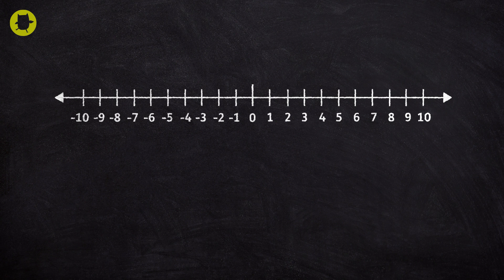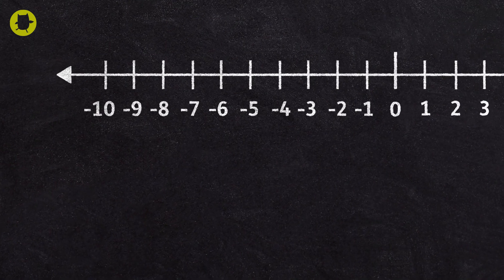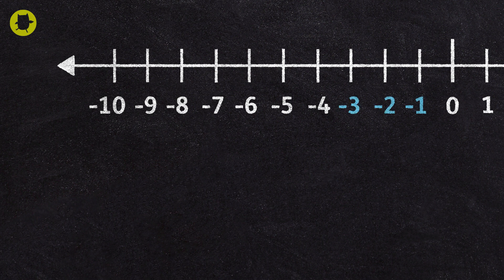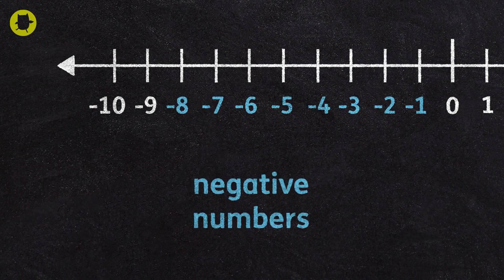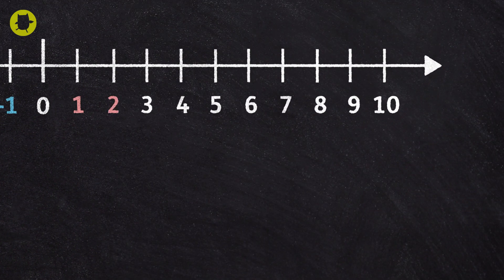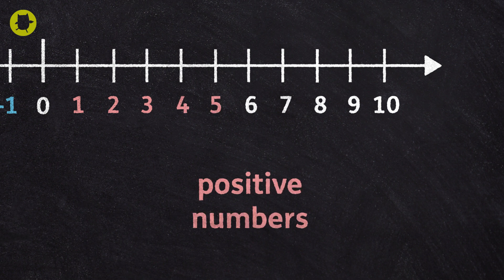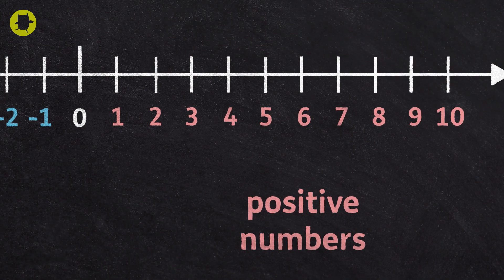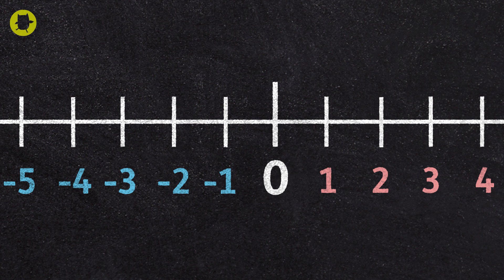Negative numbers can seem confusing, but there are simple ways to explain how they work. Numbers below zero are called negative numbers and are sometimes referred to as minus numbers. Numbers above zero are called positive numbers. Zero is neither positive nor negative.